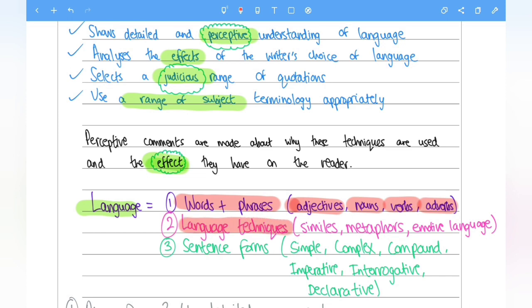Secondly, language techniques. The use of similes, metaphors, emotive language, etc. How has the writer used this for effects? And once again, you will always find this in your extract. So do make sure whilst annotating, you label these.